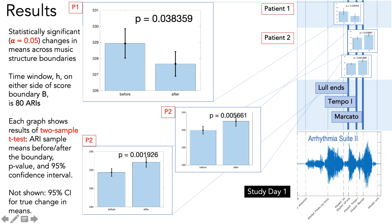You can see here in patients 1 and 2 there are statistically significant decreases and increases in the ARIs respectively at these boundary changes. This therefore represents that there are different responses to the music in the ARI at boundary points and these seem to be quite individual to the patient.